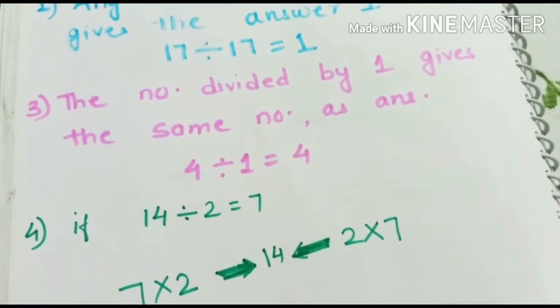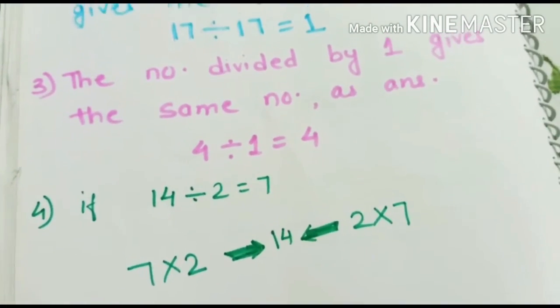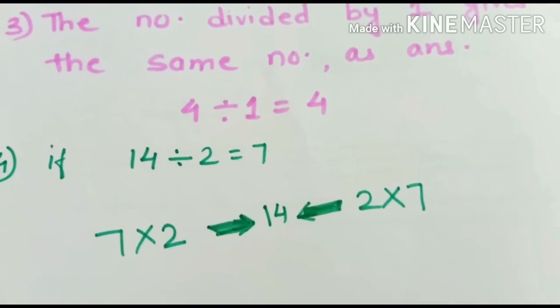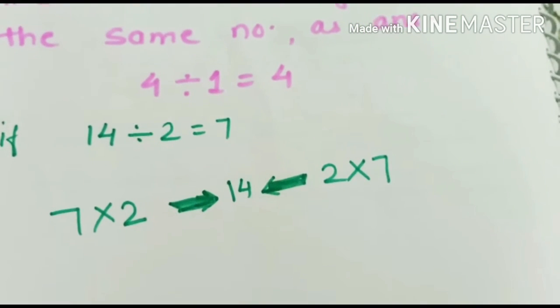If we take an example of 14 divided by 2 equals to 7, it will be same as 7 multiplied by 2 equals to 2 multiplied by 7. They both give us the answer 14.